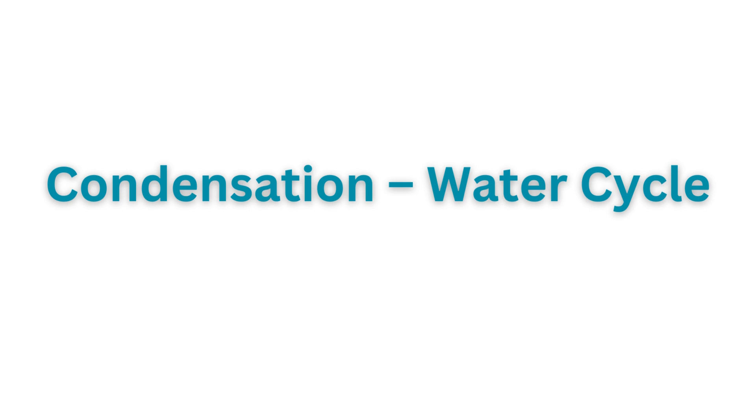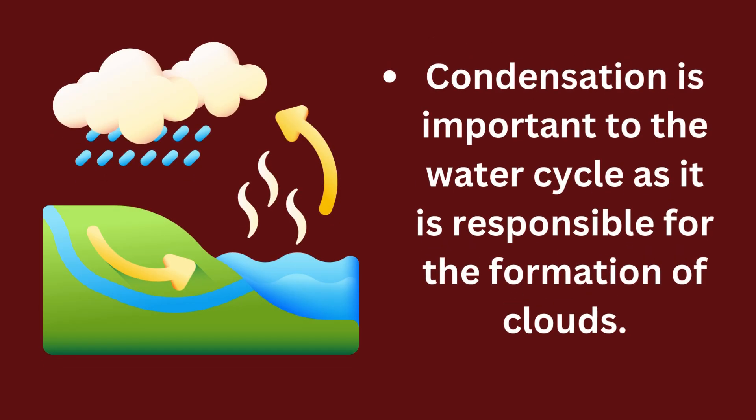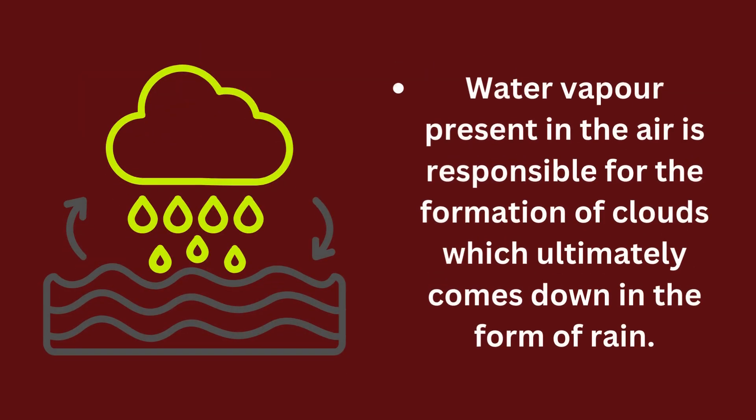Condensation is important to the water cycle as it is responsible for the formation of clouds. Water vapor present in the air is responsible for the formation of clouds, which ultimately comes down in the form of rain.